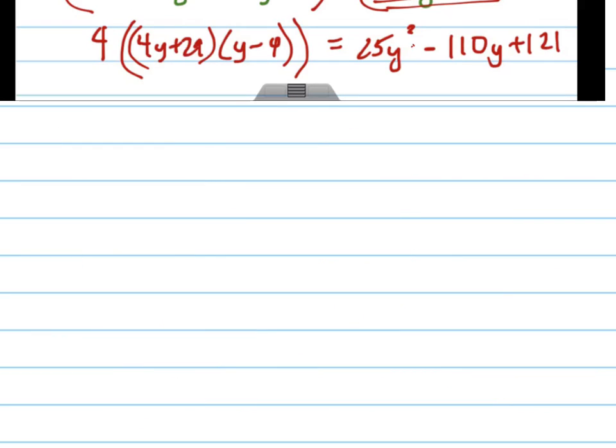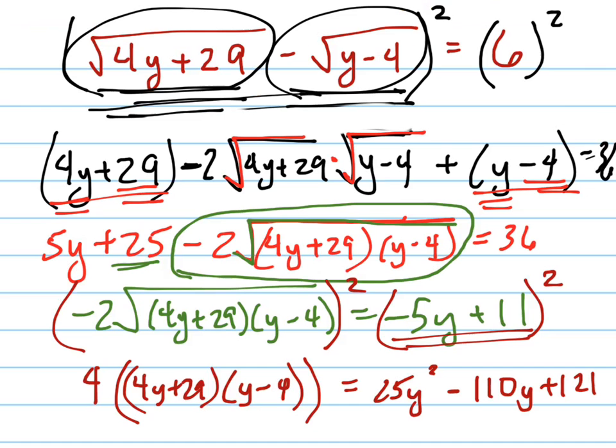Keep going on the next page. So then this, when I distribute this in right here, I get, was that supposed to be a negative 4? No, that was a positive 4.